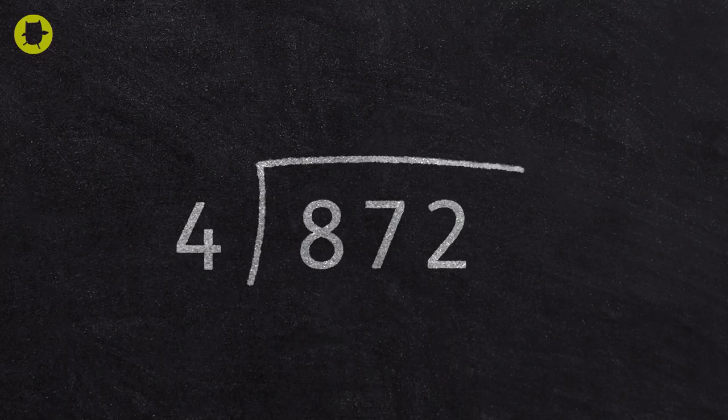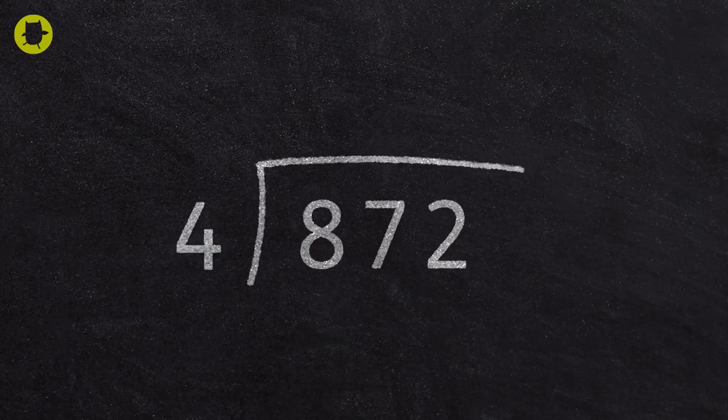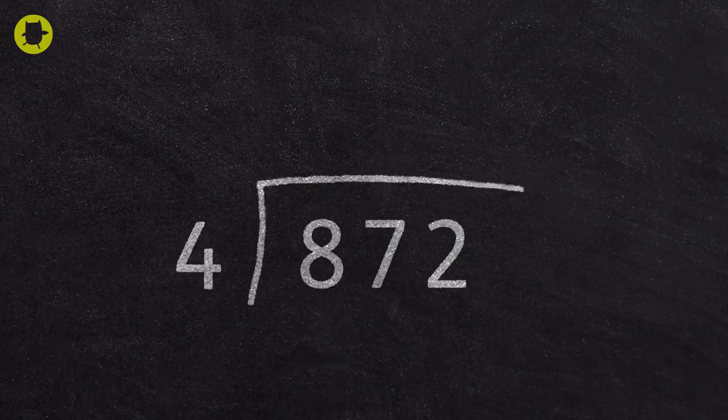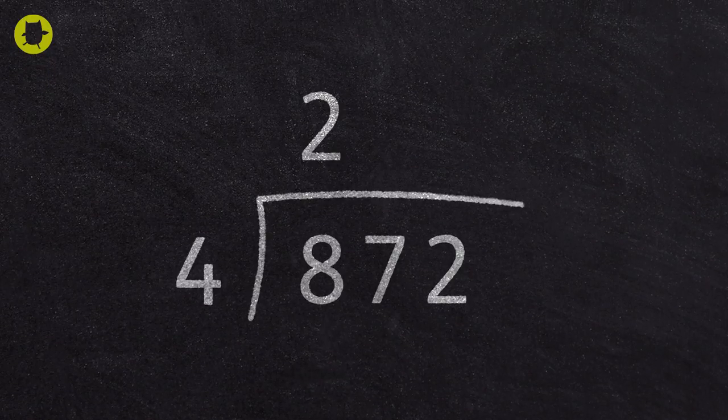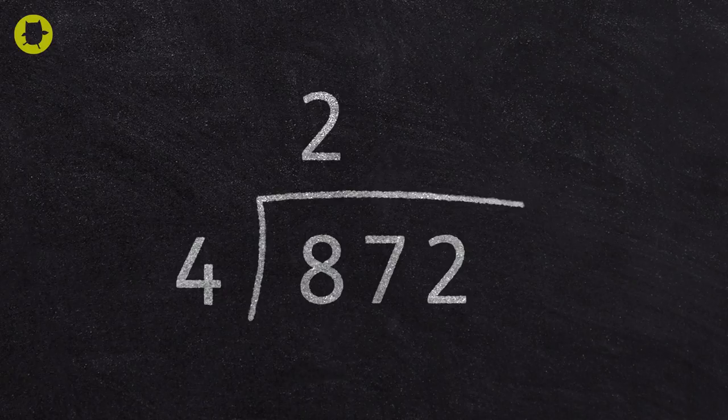We begin by asking how many fours are there in 8? The answer is 2, so we write the 2 above the 8. Then we ask how many fours are there in 7? The answer is 1 with a remainder of 3.